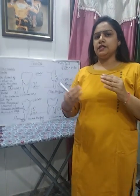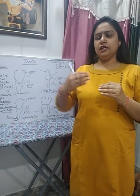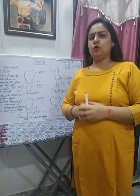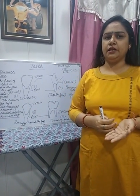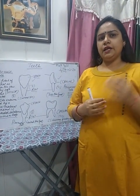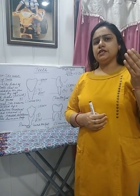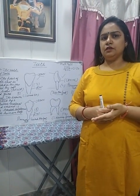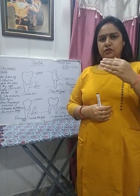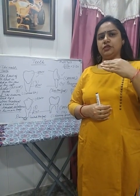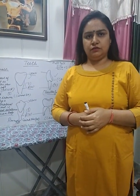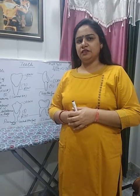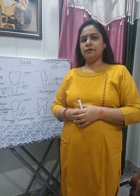There are 10 milk teeth in each jaw — 10 in the upper jaw and 10 in the lower jaw. Permanent teeth are 32 in number — 16 in each jaw, 16 in the upper jaw and 16 in the lower jaw.